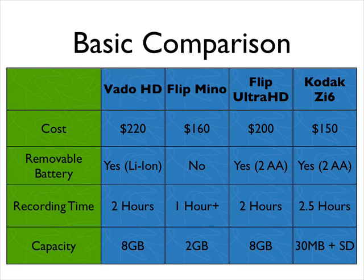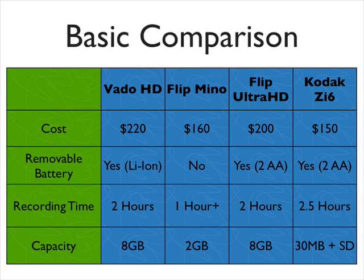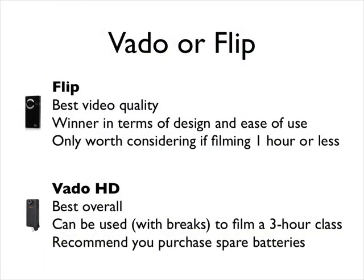This leaves me with the Vadoo HD — my preferred device. Affordable, removable battery, recording time in excess of two hours, and eight gigabyte capacity allowing eight hours of content, because even though it's an HD device I can record in VGA. There's no need to record in HD if I'm going to compress the video for students. The Flip is incredible for ease of use and quality, but only worth considering for one hour or less. The Vadoo HD isn't as pretty, but it's the best overall — I can use it with battery changes to film a three-hour class.